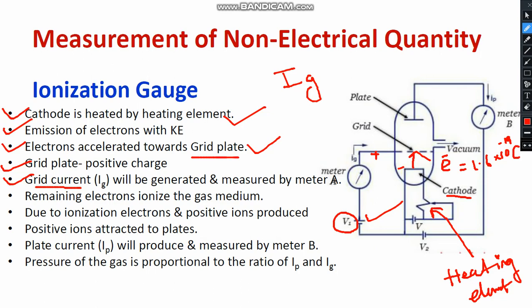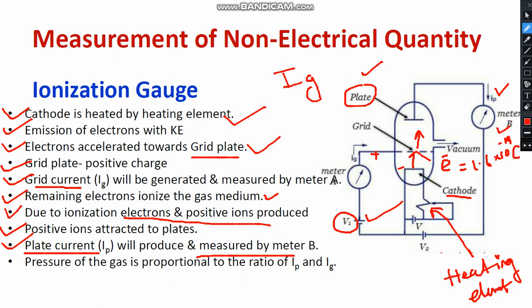A few electrons move beyond the grid and continue towards the plate. These remaining electrons ionize the gas medium. Due to this ionization, electrons and positive ions are produced. The positive ions are attracted towards the plate, and more electrons are generated, keeping the medium ionized. The electrons reaching the plate result in the generation of plate current, denoted by ip, which is measured by meter B.